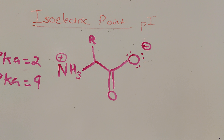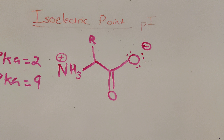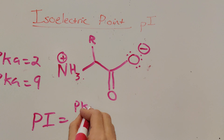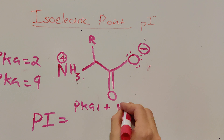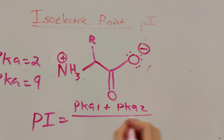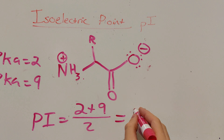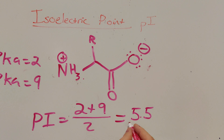Because we determined that the net charge equals zero, we have our two pKa values to plug into our equation for PI. We use the pKa value of the functional group that was just deprotonated to reach net zero charge, and the pKa value of the functional group that would be deprotonated next. The equation is: PI = (pKa1 + pKa2) / 2 — essentially the average of the two pKa values. Plugging in 2 plus 9 divided by 2 gives us 5.5. So our PI value for this amino acid is 5.5.